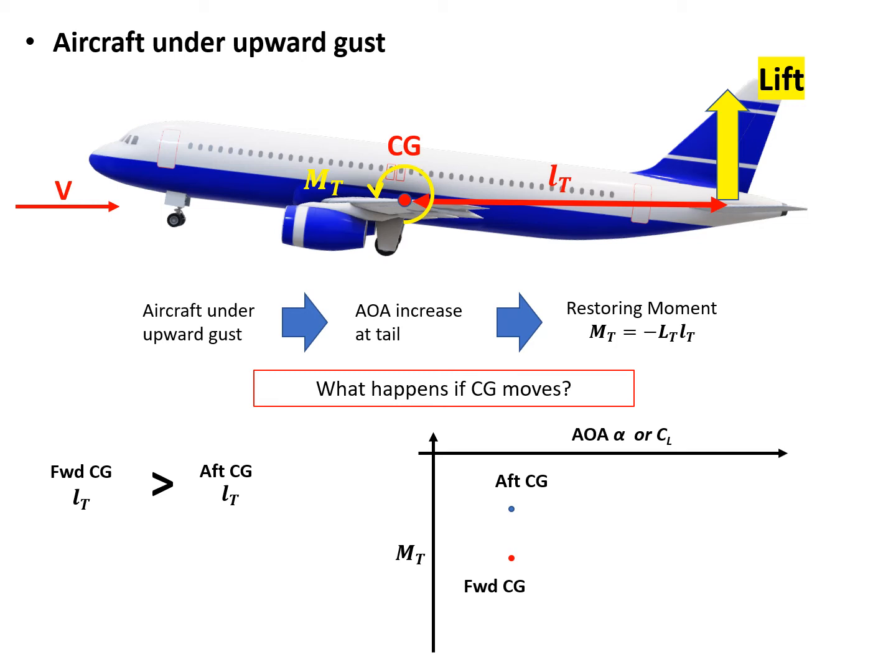For these two CG locations, as we increase the angle of attack and move along the x-axis, they will follow different tracks because they have different moment arms. The forward CG has a longer moment arm, so the curve slope is steeper than the aft CG, which has a shorter moment arm, so its restoring moment increases less quickly than the forward CG.